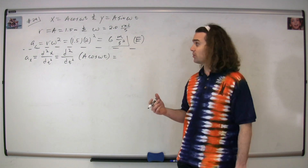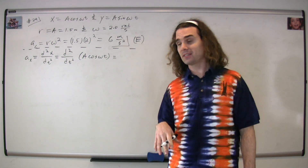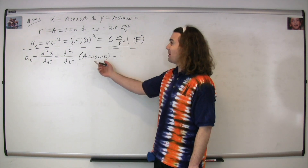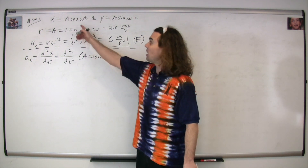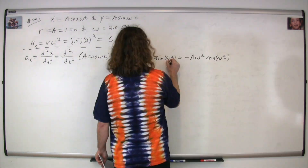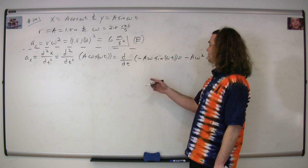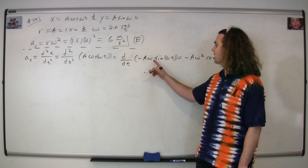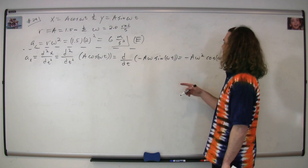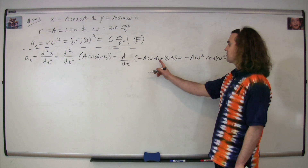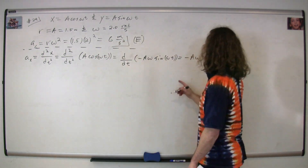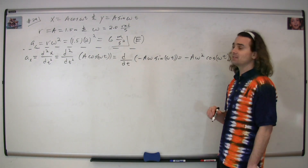We know the acceleration is equal to the second derivative of position with respect to time. So we can figure out the acceleration in the x direction by taking the derivative twice with respect to time of a cosine(ωt). Taking the derivative once, the derivative of cosine is negative sine, and we also need to multiply by omega. Taking the derivative again, we multiply by omega and the derivative of sine is cosine. So we get that the acceleration in the x direction equals negative a·ω² cosine(ωt).